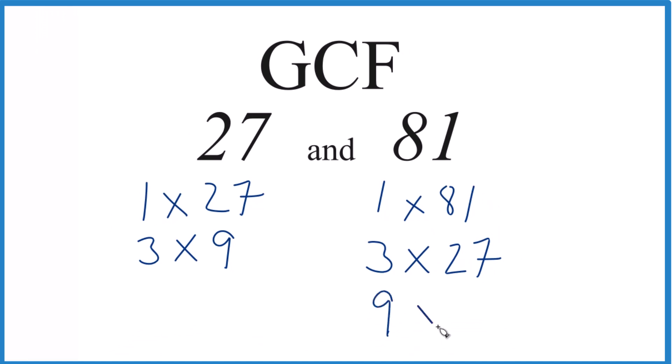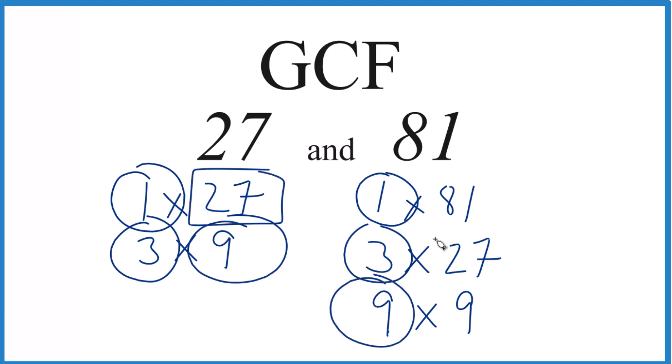So these are the factors that go into 81. Common factors: 1 goes into both 27 and 81, so that's a common factor, but it's not the greatest factor because we have 3 that's larger. 9 goes into both of them, but the greatest common factor is 27.